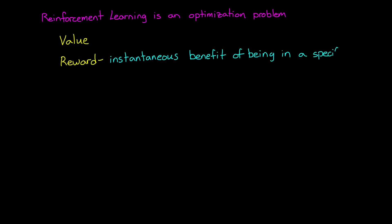Now, at its heart, reinforcement learning is an optimization problem, but there are some very interesting concepts that set reinforcement learning apart from other optimization techniques. First is the idea of value. Reward is the instantaneous benefit of being in a specific state, whereas value is the total reward that an agent can expect to collect from that state and onwards into the future.